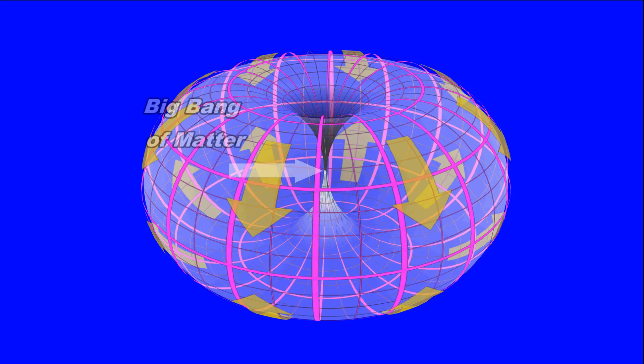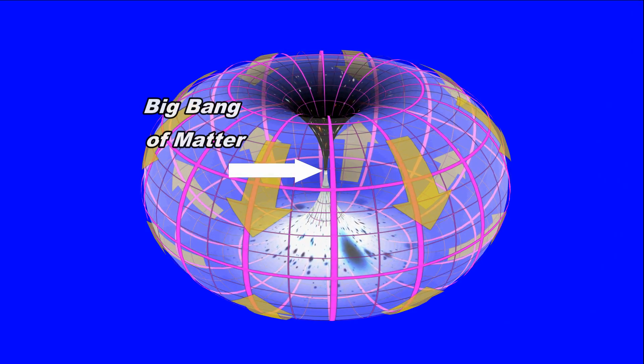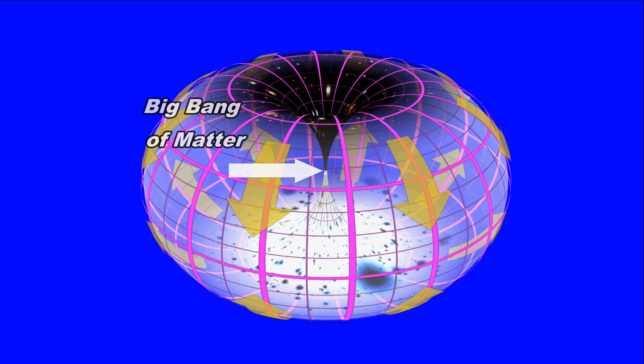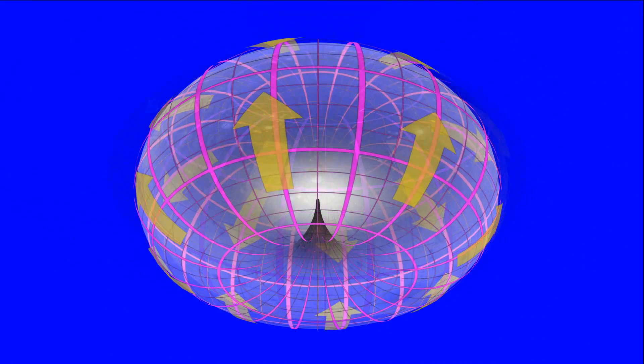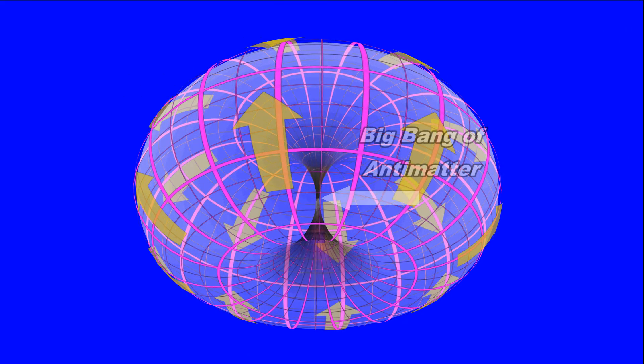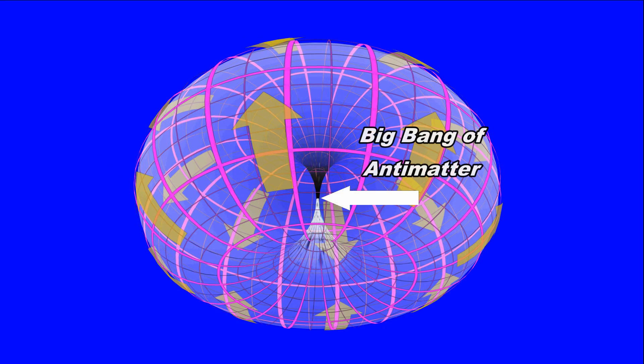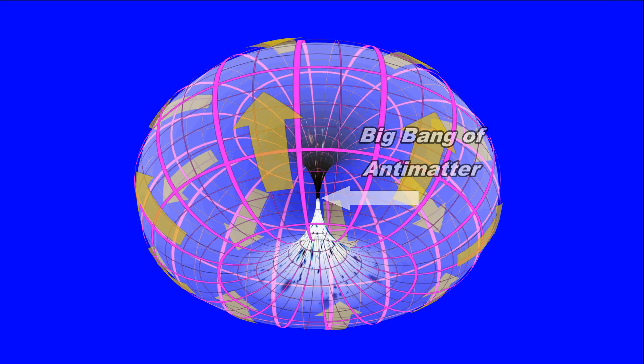It's 13.72 billion years ago. An explosion spurts abruptly from the bagel's hole. Rocketing up the bagel's top side is a big bang of matter. But gushing from the hole on the bottom is an equal and opposite big bang of antimatter. That's where all the antimatter goes.